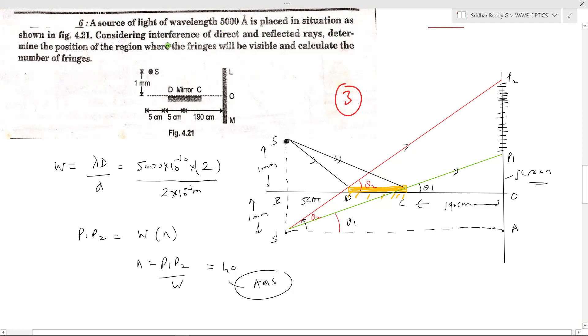So direct and deflected rays - determine the position of the region where the fringes will be visible and calculate the number of fringes. He's asking region where the fringes will be visible and calculate the number of fringes that are formed on the screen.